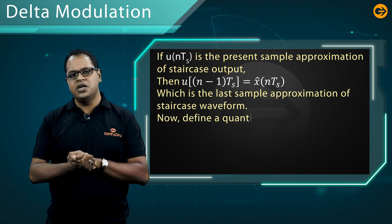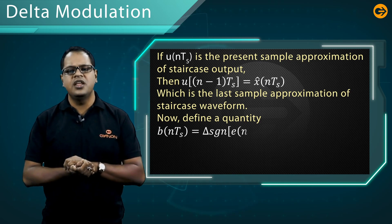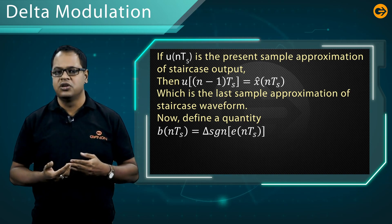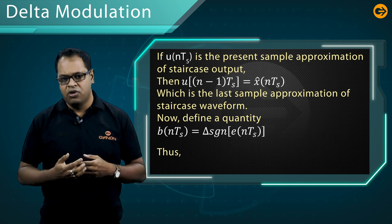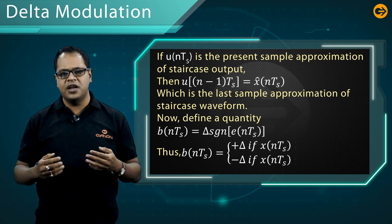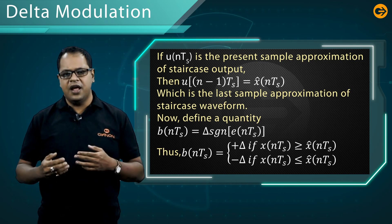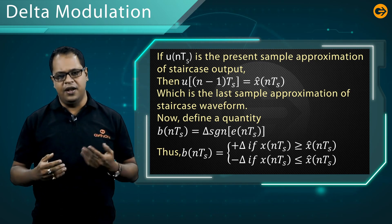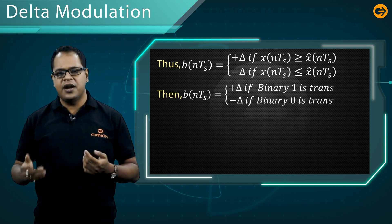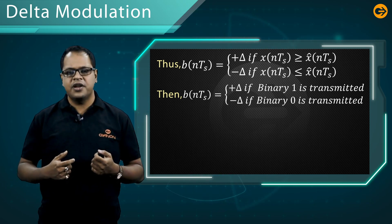Now let us define a quantity b(nTs) which is equal to delta times sgn(e(nTs)). The sgn function is the signum function. So b(nTs) equals plus delta if x(nTs) is greater than or equal to x̂(nTs), and equals minus delta if x(nTs) is less than or equal to x̂(nTs). This means b(nTs) is plus delta if binary one is transmitted, and minus delta if binary zero is transmitted.